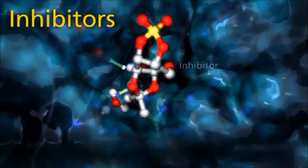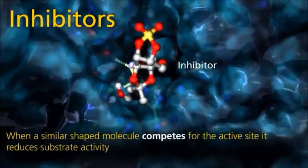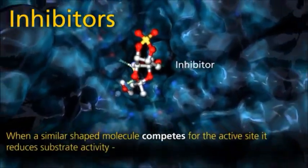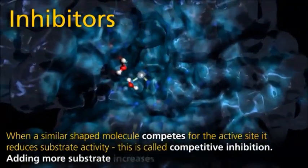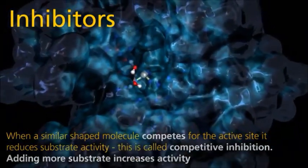When a similar shape molecule competes for the active site, it reduces substrate activity. This is called competitive inhibition. Adding more substrate increases activity.